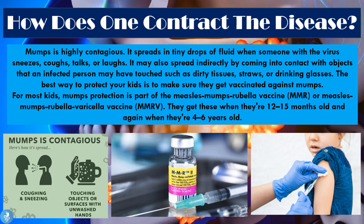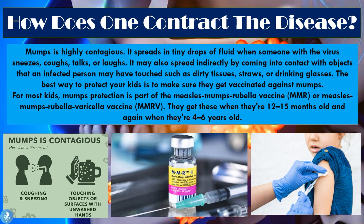Now let's take a closer look at the signs and symptoms of mumps. The primary sign is the swollen salivary glands that cause the cheeks to puff out, and the majority of patients present with these very large puffed-up cheeks. Other signs include pain in the swollen salivary glands on one or both sides of the face. Usually the virus affects one side first and then travels to the other side — patients may present with the left side completely inflamed first, which then spreads to the right, or vice versa.